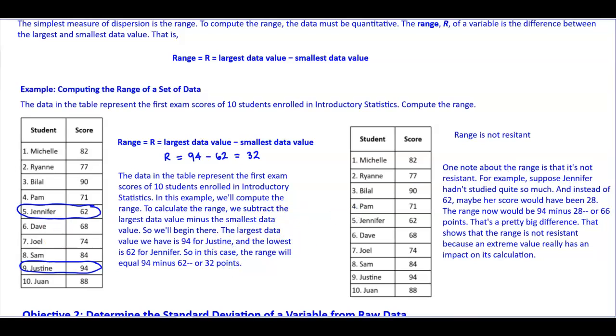Now, let's take a look at another note about the range, because it's not resistant. The reason why it's not resistant, let's say that we decide to change the score of Jennifer to go from 62 to 28.